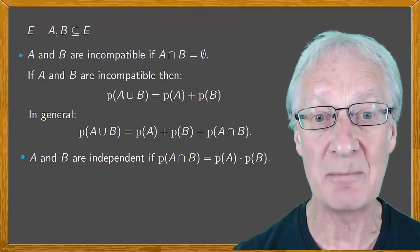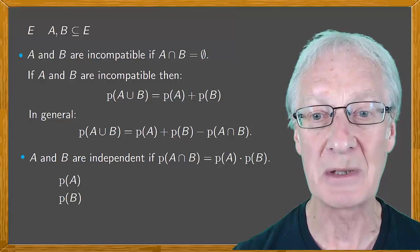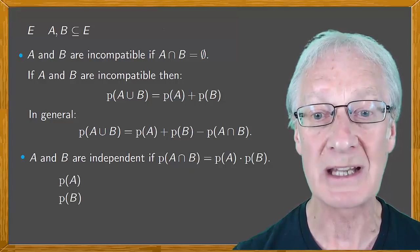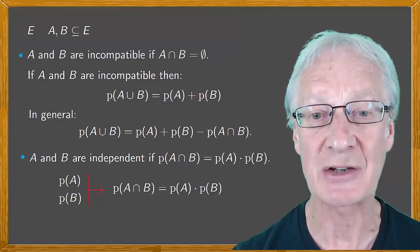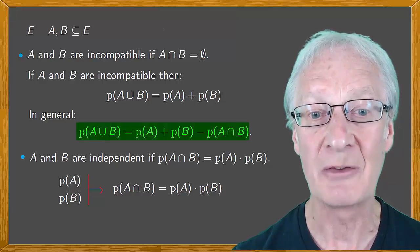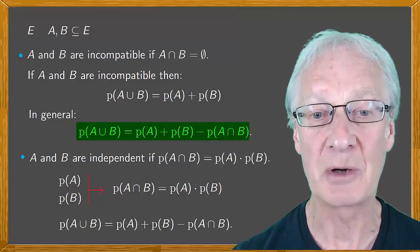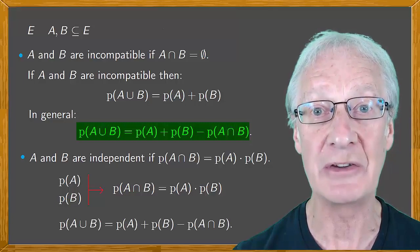Notice then that if A and B are independent, knowing the probabilities of A and B, we can calculate the probability of A intersection B, and from this, from the previous formula, the probability of the union of these events.